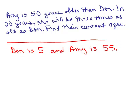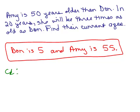Remember that she was 50 years older, so that part makes sense. But we want to see if the rest of the problem makes sense. We came up with Don is 5 and Amy is 55. We're going to check it. First, is it true that Amy is 50 years older? Yes. What else? In 20 years she'll be three times as old as Don.